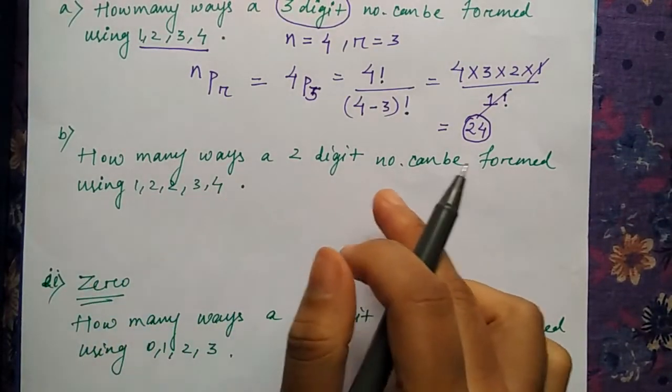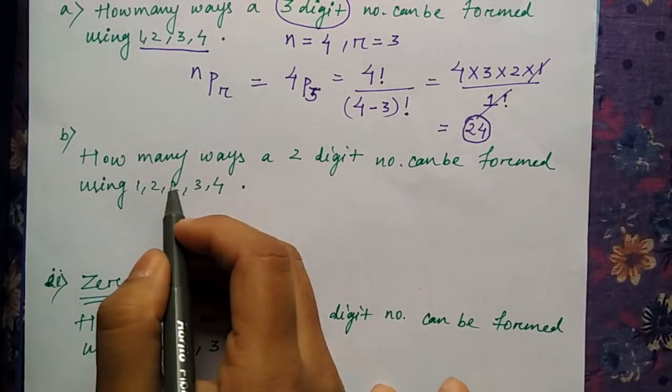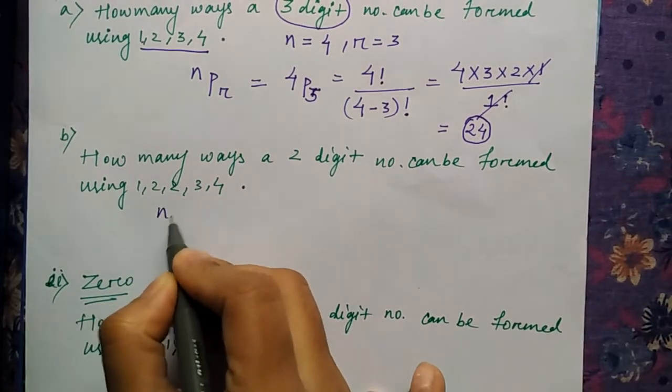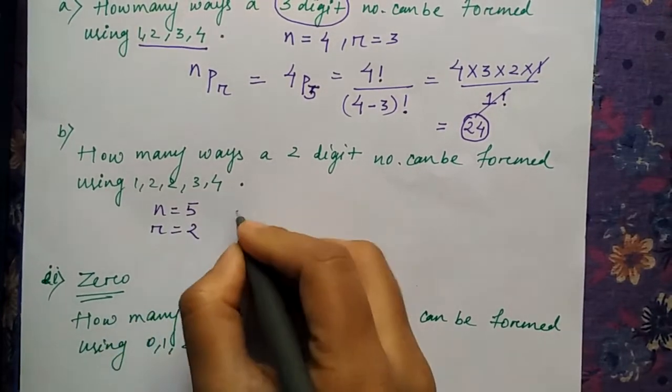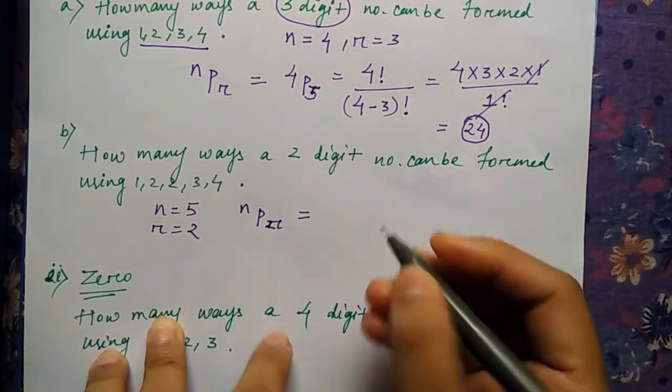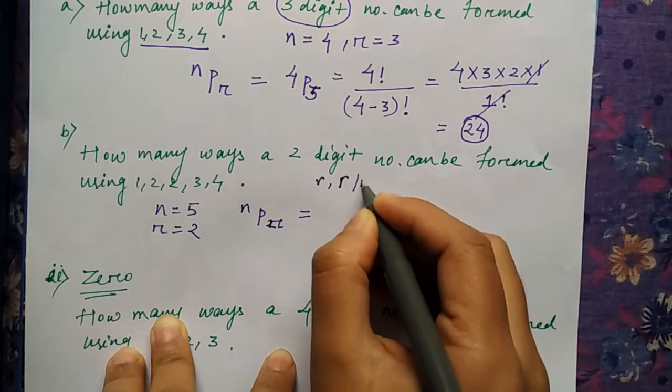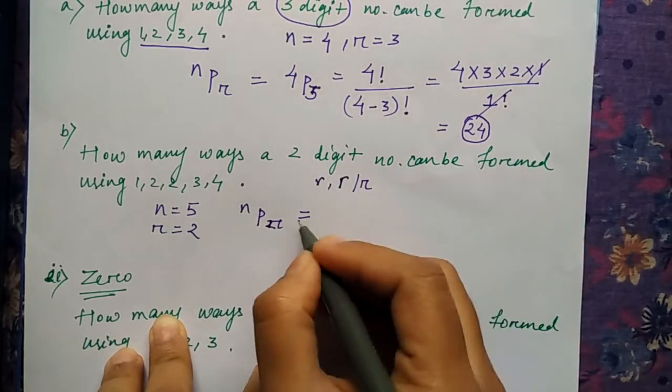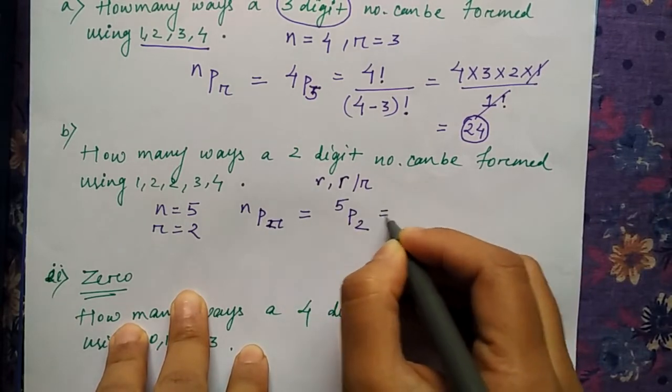Then we'll see the other one. How many ways can a two-digit number be formed using these numbers? Totally how many objects you have? Number of objects is 5, and arrangement you want for two-digit number. So the formula will be NPR—sorry, I told you my R is different. Either you can write like this or however you write. So NPR is 5P2.